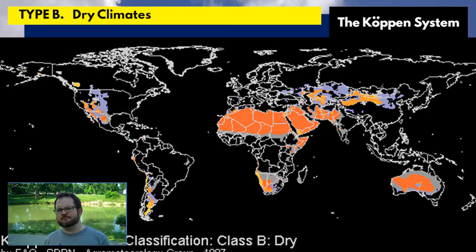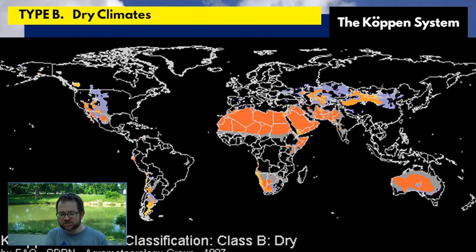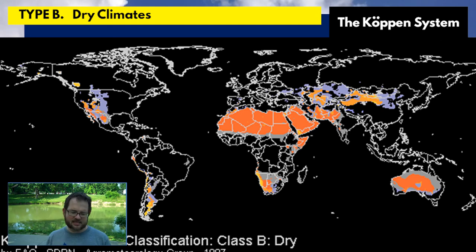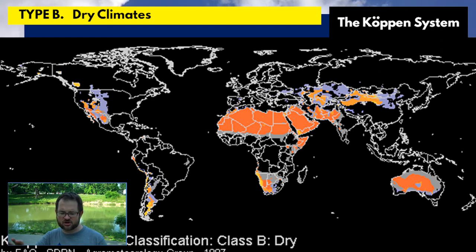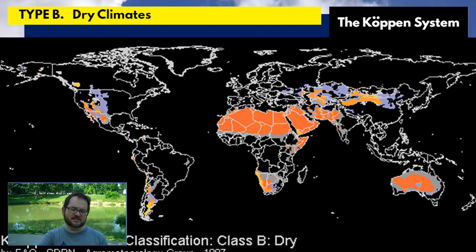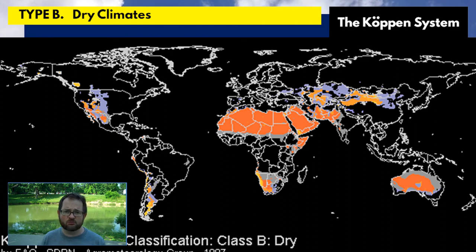Type B climates are the dry climates — the hot and dry climates. In terms of land mass, type B climates cover more area than any other climate type. They spread across the Sahara Desert, the Gobi Desert, the Outback, the Atacama Desert, the Kalahari, much of the southwest United States, the Rocky Mountain area, and western parts of the Dakotas.